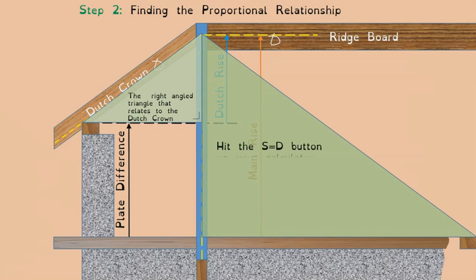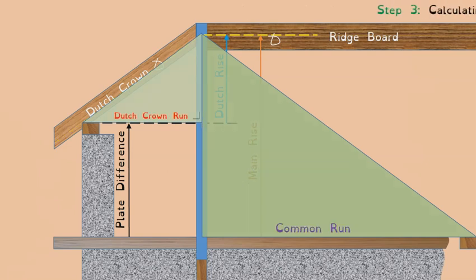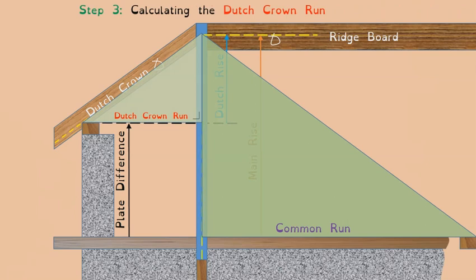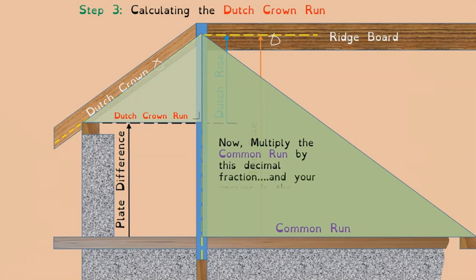Calculating the Dutch crown run is the next objective. Multiply the common run by the decimal fraction — the proportional relationship just discovered — and the answer will be the Dutch crown run. So now we have both the rise and the run of the Dutch crown.